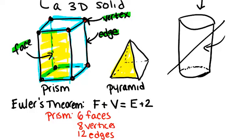And let's see if this follows with Euler's theorem. The number of faces is six plus the number of vertices is eight. Does that equal the number of edges, twelve, plus two? Well, six plus eight is fourteen. And that does equal twelve plus two, also fourteen. So Euler's theorem holds in this case.